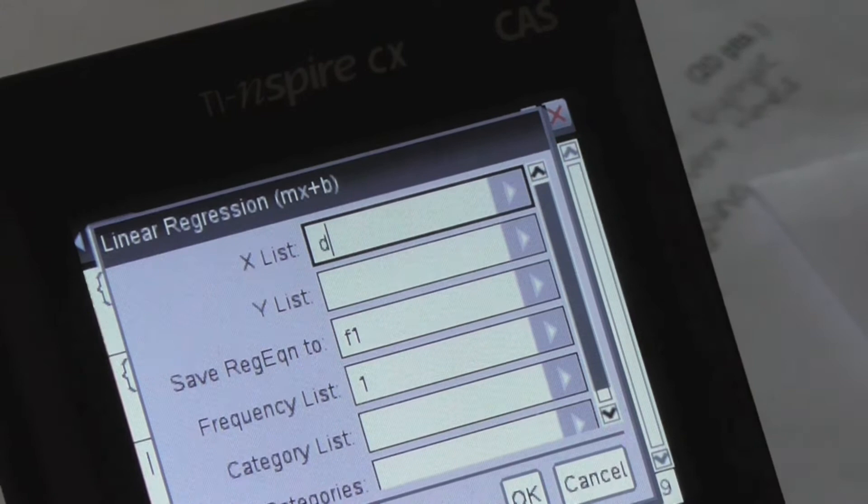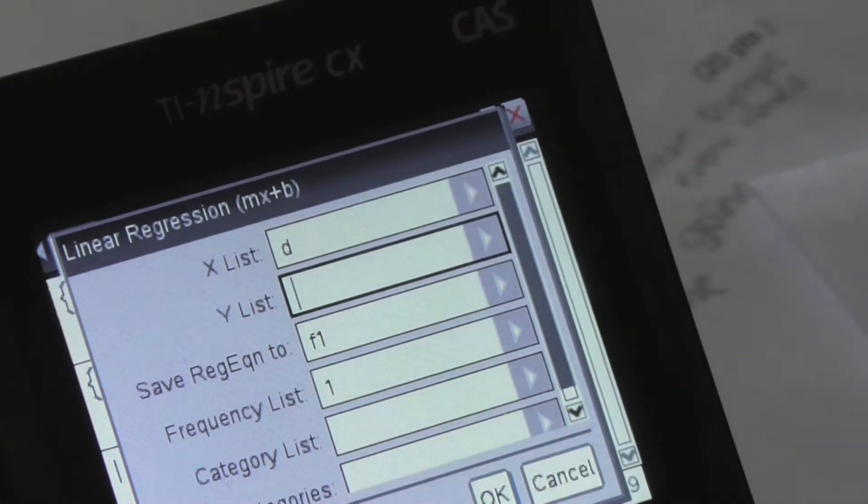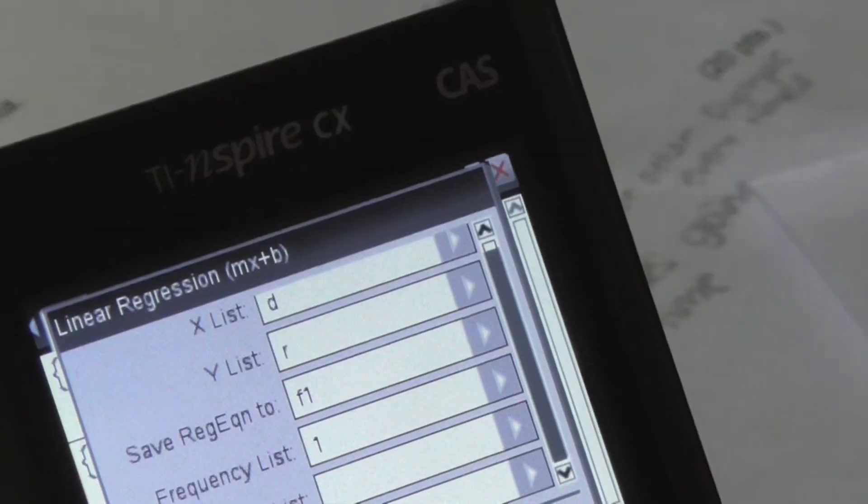For your x list, you want to enter d for domain, and for your y list, you want to list r for range. Click OK.